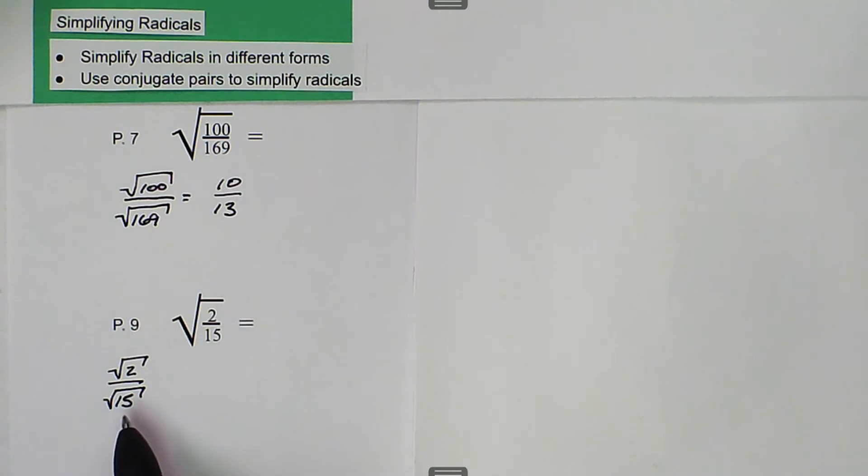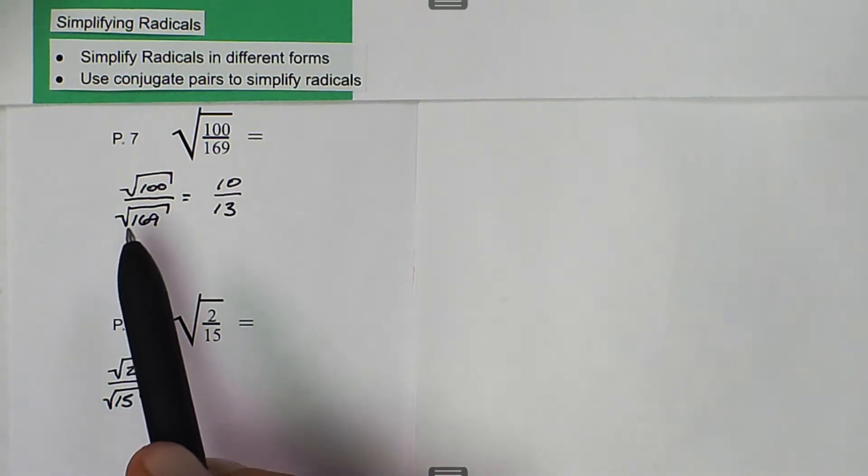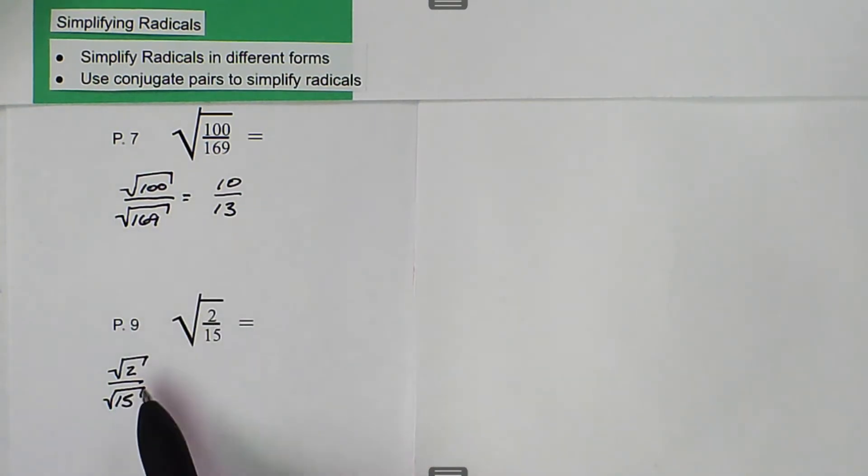The issue is here, unlike the first problem where we had a perfect square in the denominator, here we don't have a perfect square. So what we have to do is multiply by 1, but we have to multiply it by a specific one.